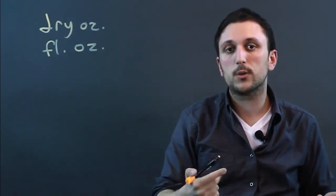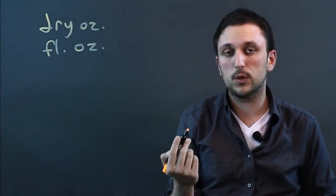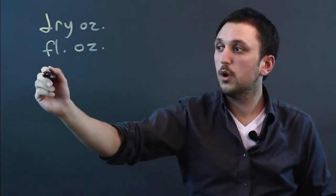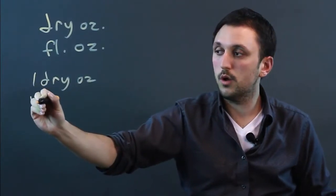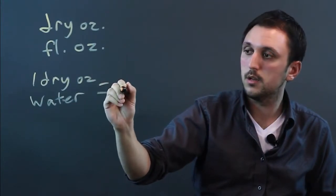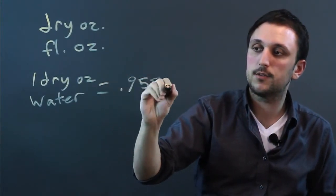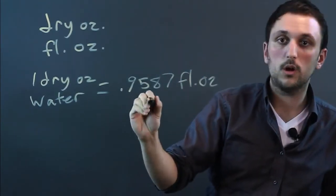It also depends on what you're measuring. You have to make sure you're checking based on what substance you're using. For example, with water, one dry ounce of water equals 0.9587 fluid ounces of water.